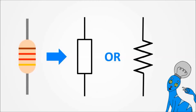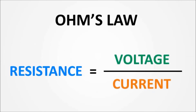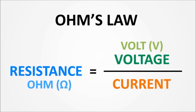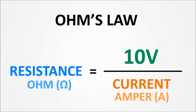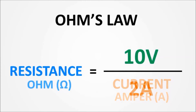And that's the famous Ohm's Law. Resistance equals voltage divided by current. Resistance unit is ohm, voltage unit is volt, and current unit is ampere. Let's take a look at our first example: having a 10V voltage and a 2A current, we know the circuit's resistance is 5 ohms.